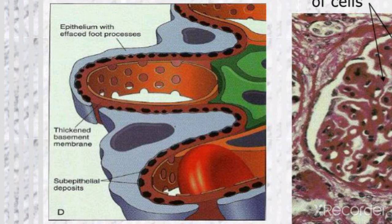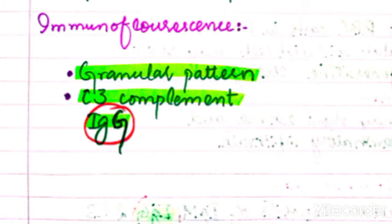Under electron microscopy, you can see the basement membrane is thicker and thicker — this is the light microscopy finding. The sub-epithelial deposits are the electron microscopy finding. You look at the spike and dome pattern from these subepithelial deposits. The spikes are highlighted, and the dome areas are visible. In electron microscopy, you also see granular immunofluorescence because of the immune complex formation.